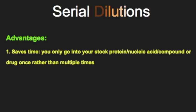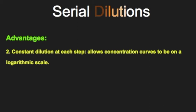So what are the advantages of doing your dilutions this way? The first one is that it saves time. You only go into your stock protein, nucleic acid, compound, or drug once rather than multiple times for each of the five or more dilutions that you want to do. Second, which is the most important, you have constant dilution at each step, and the importance of that is that doing the constant dilution at each step allows concentration curves that are on a logarithmic scale.